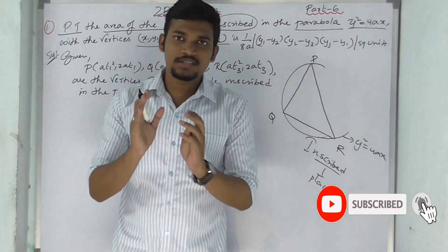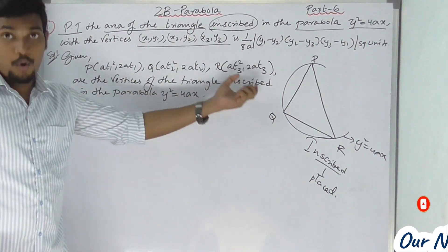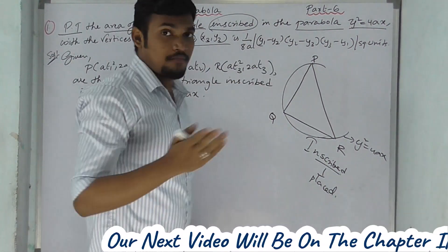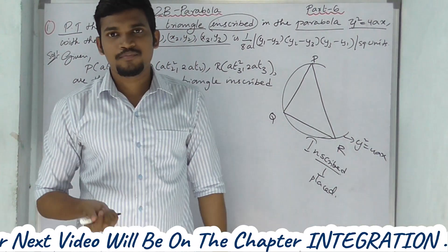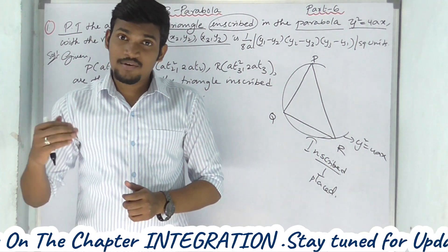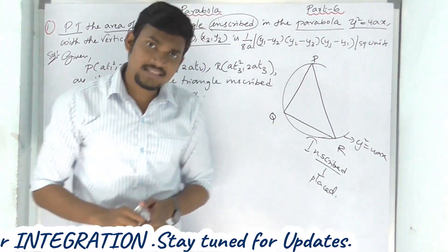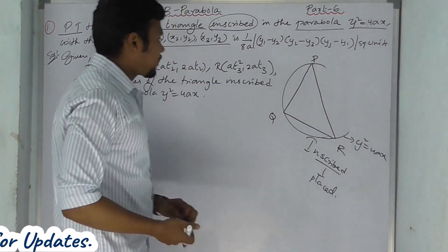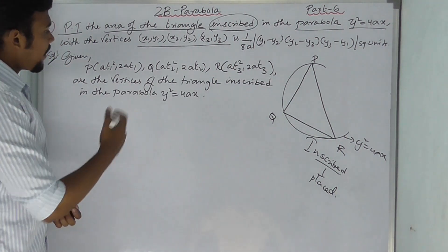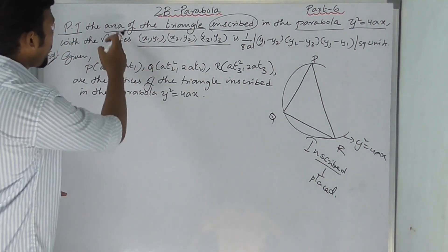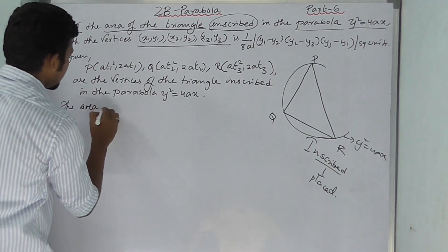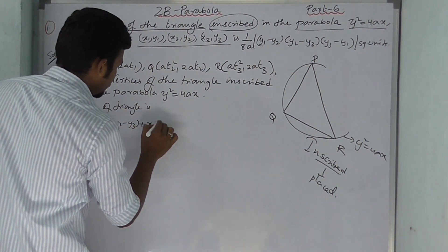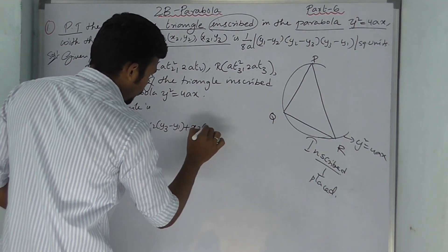When you see the question, you must recognize that the points P, Q, R lie on the parabola. First check that the point satisfies y² = 4ax. The area of triangle formula from 10th class coordinate geometry is: Area = ½ |x1(y2 − y3) + x2(y3 − y1) + x3(y1 − y2)|.